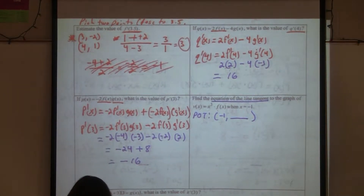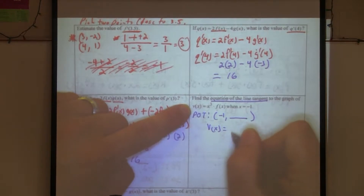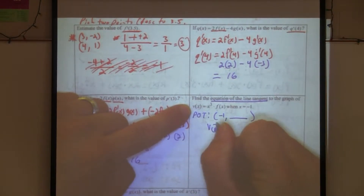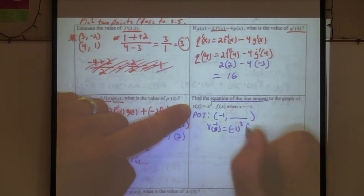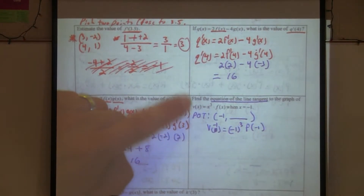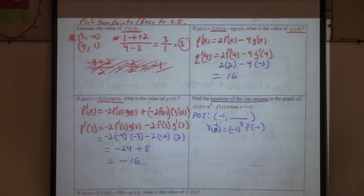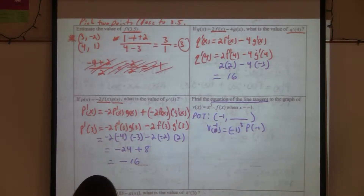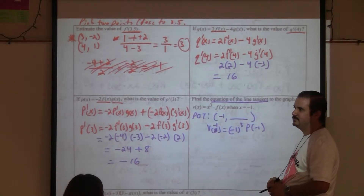We want v of negative one, which is negative one to the third times f of negative one. Do we use the table for that? Yes, we use the table. f of negative one is two. But we don't use just two — we need to multiply by negative one to the third.